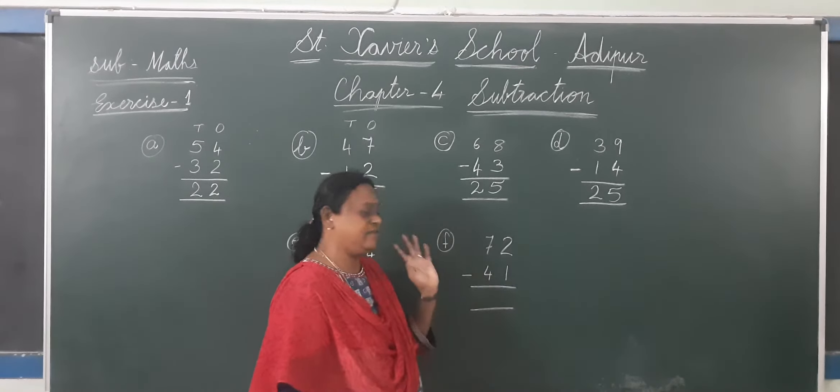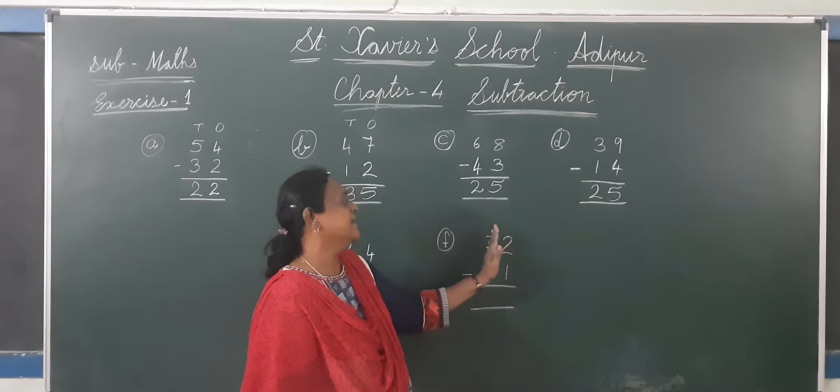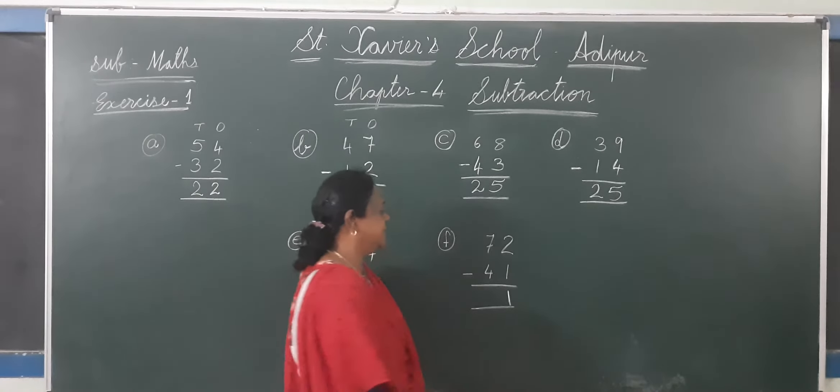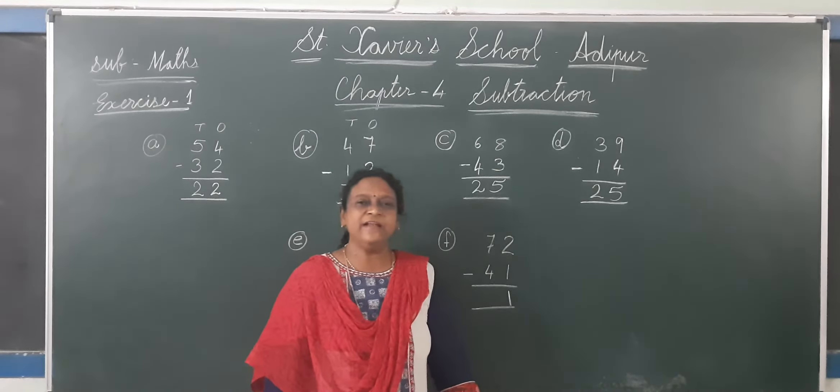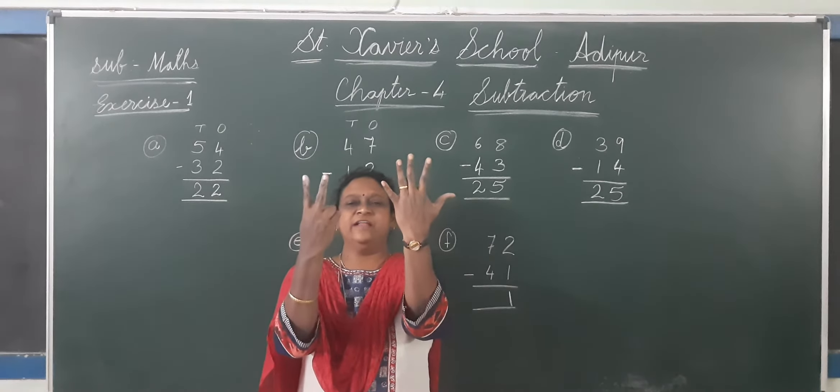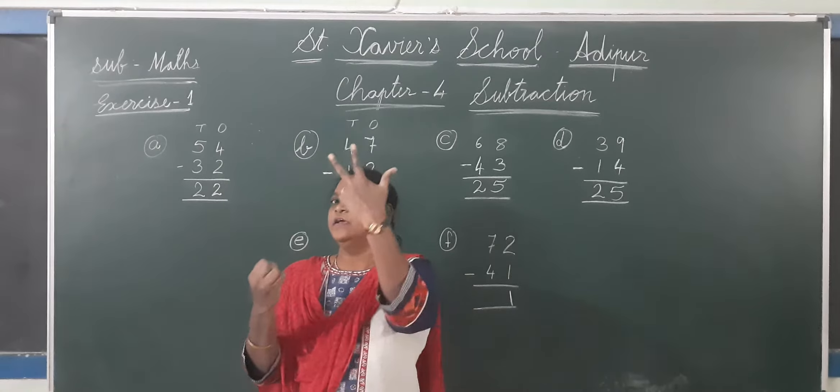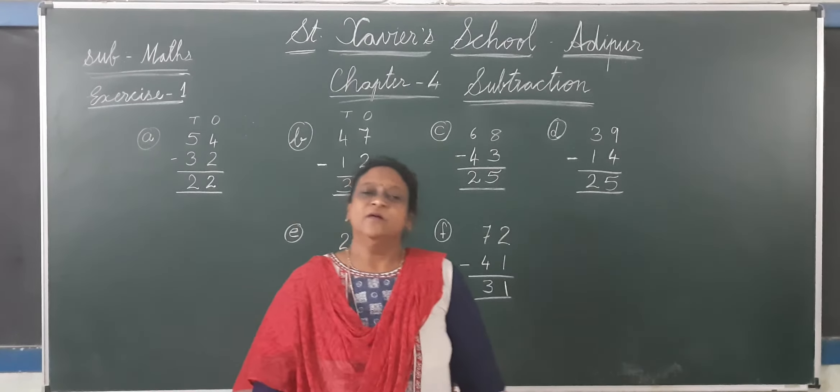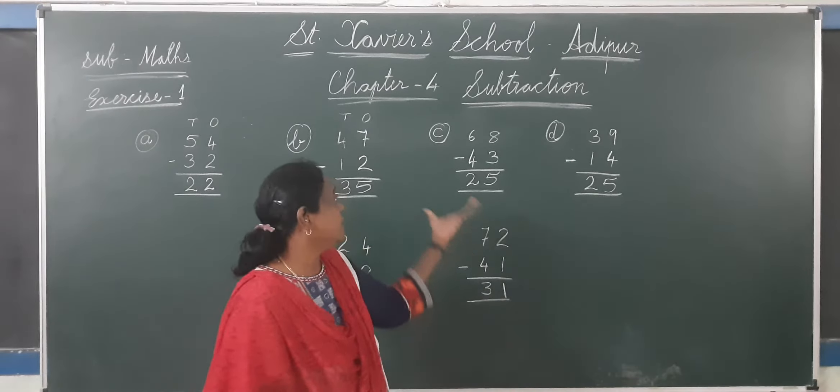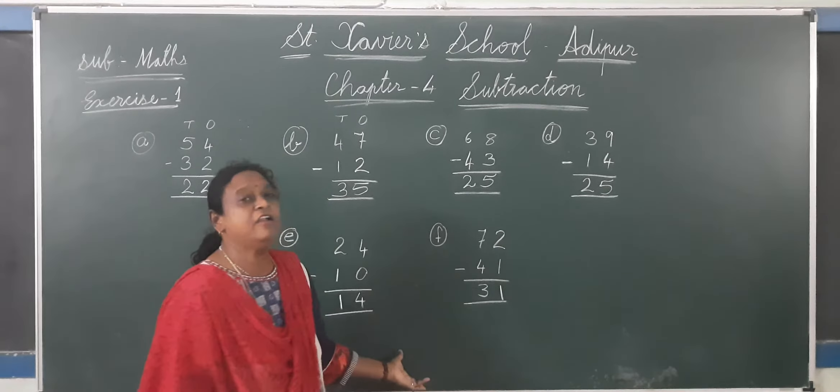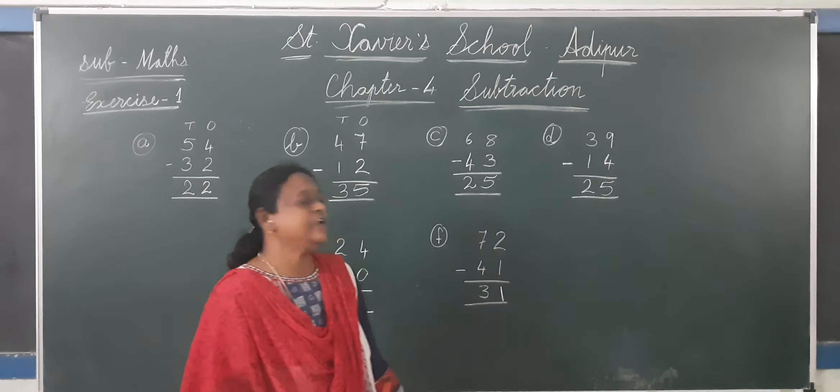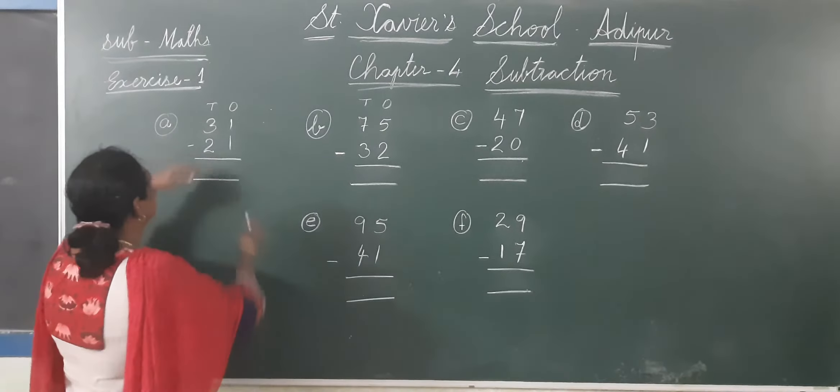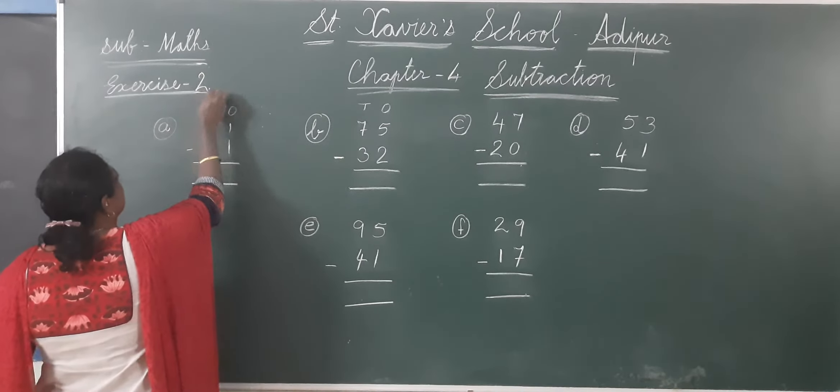Now you have 72 minus 41. This is big figure. 2 minus 1 is 1. 7 minus 4. 1, 2, 3, 4. Remaining is 3. Now you have to write this Exercise number 1 in your fair notebook.